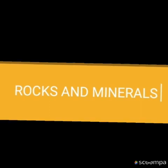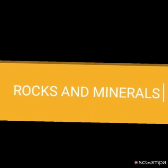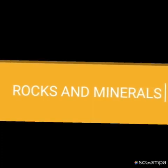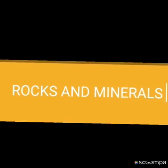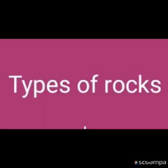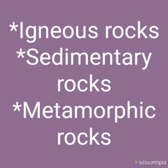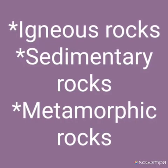Rocks and minerals: The Earth's crust is made of various types of rocks. Any natural mass of mineral matter that makes up the Earth's crust is called a rock. Rocks can be of different colour, size and texture. There are three major types of rocks: igneous rocks, sedimentary rocks and metamorphic rocks.